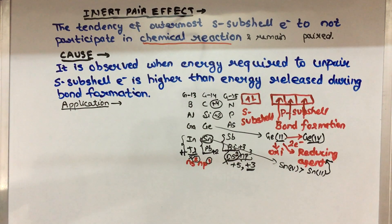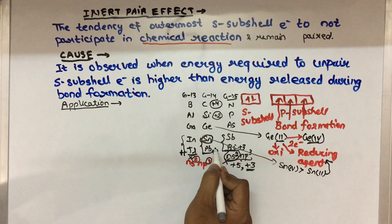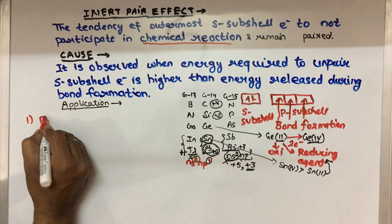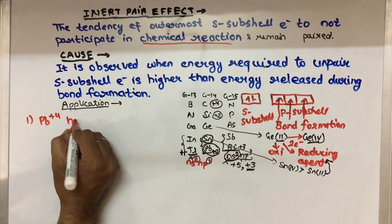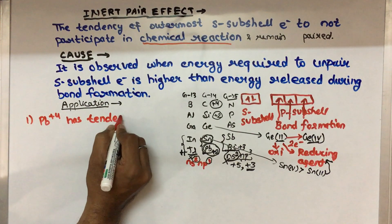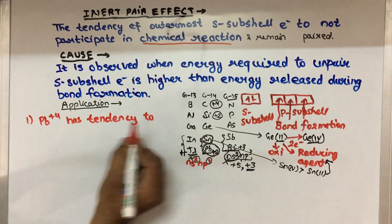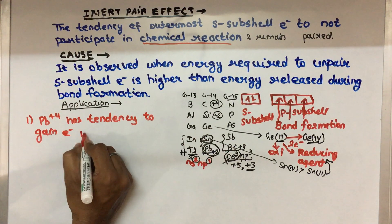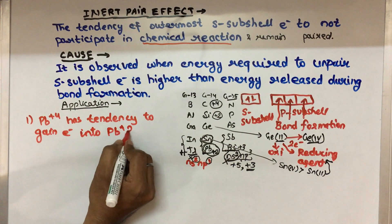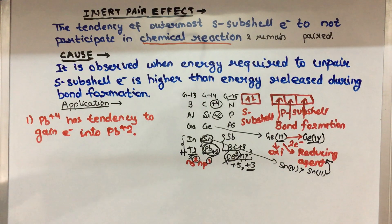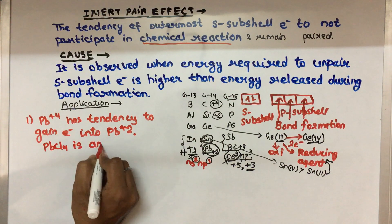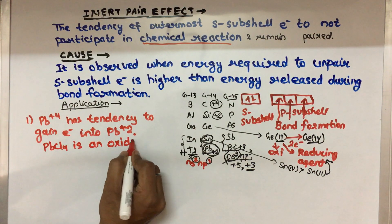Now, in the case of lead, the +2 oxidation state is more stable. Therefore, Pb(IV) has the tendency to gain electrons and convert itself into Pb(II). So we can say PbCl4 is an oxidizing agent.